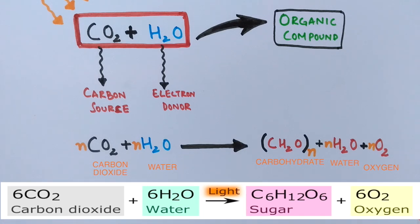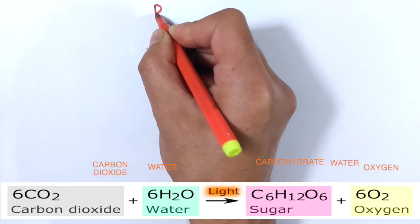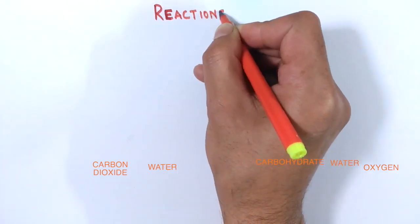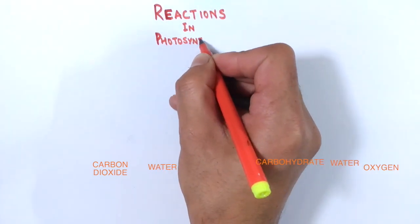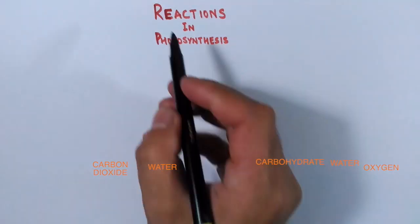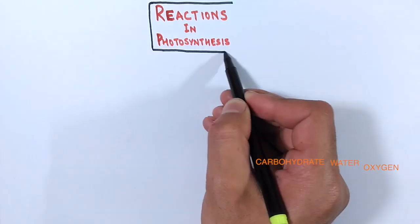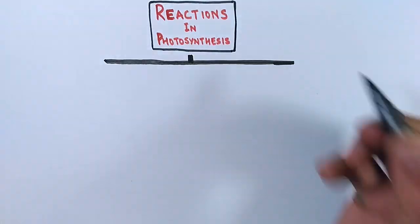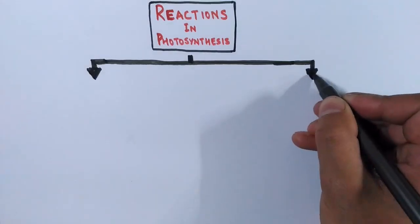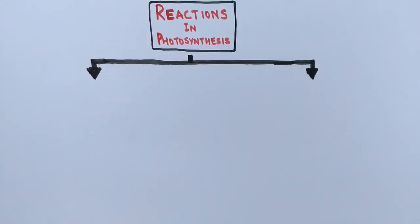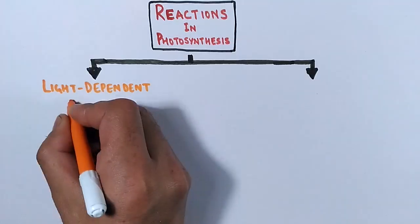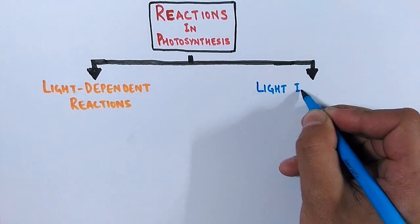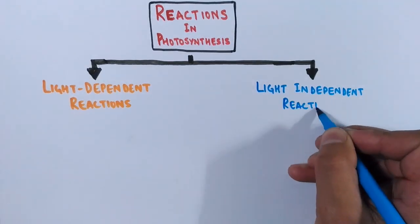Now let's look at the stages of photosynthesis, which are based on reactions occurring in sequential order. The reactions of photosynthesis are categorized into two types: light-dependent reactions and light-independent reactions.